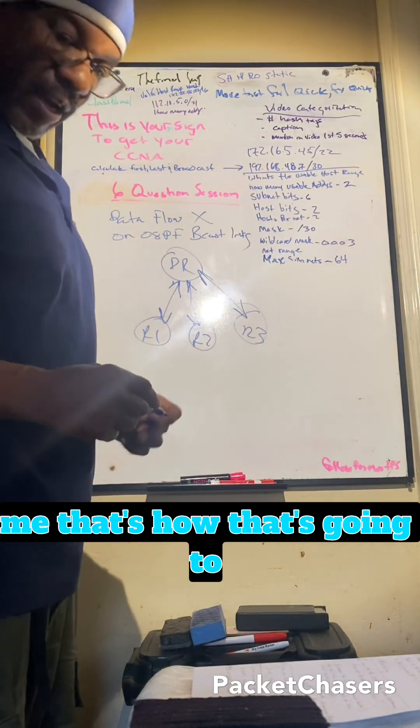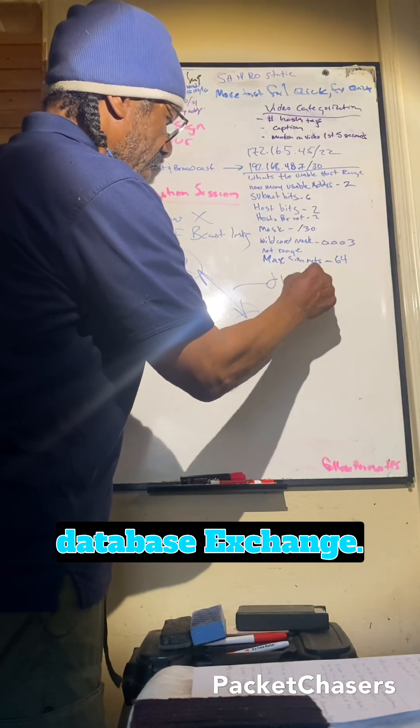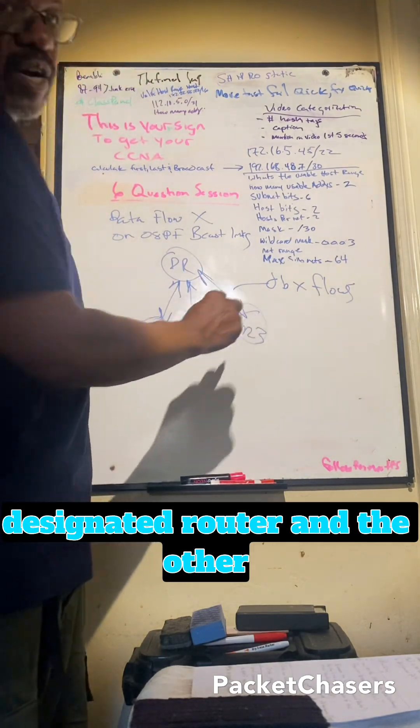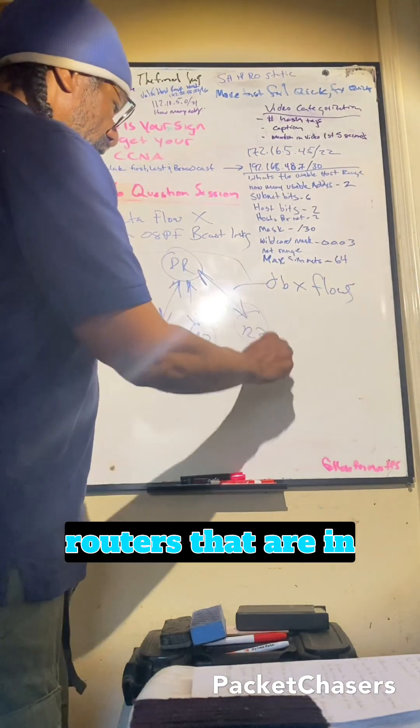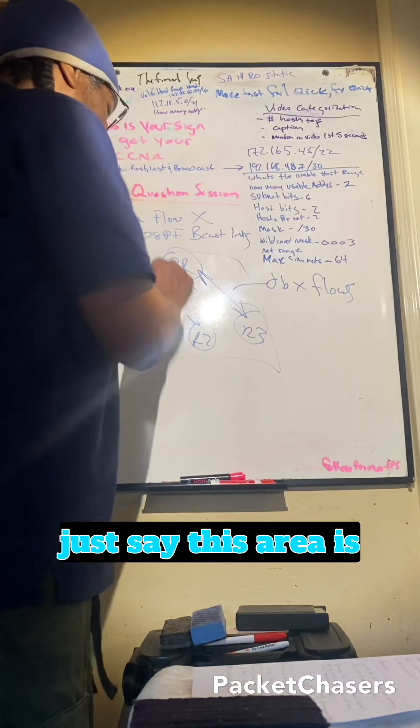That's how that's going to occur. These are database exchange flows between the designated router and the other routers that are in the area, basically. Let's just say this area zero.